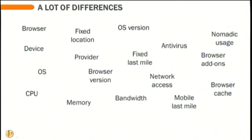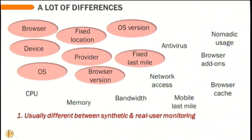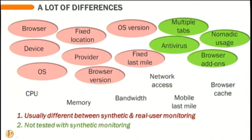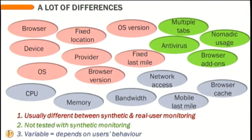Some factors are really, really different between the different methodologies, such as the browser, the versions, the operating system. Some factors are even usually not taken into account, such as multi-tab navigations and browser plugins. And other factors will be very variable also, because a user that has a very new desktop is not the same as a user having a desktop from five or ten years old — same for the bandwidth and the network access.